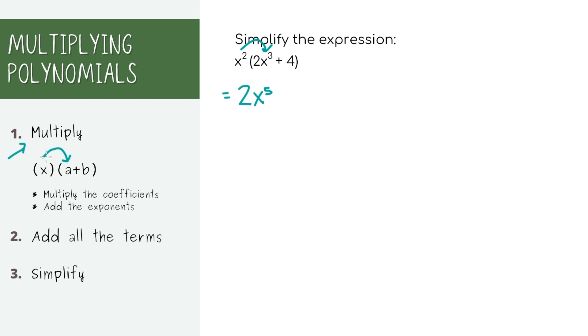Next, you take that first term again, then multiply it to the second term inside the parentheses. We're going to add all these terms together and simplify if necessary. Although there's nothing really to simplify here, so this is actually our final answer.